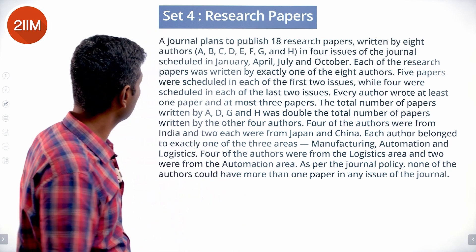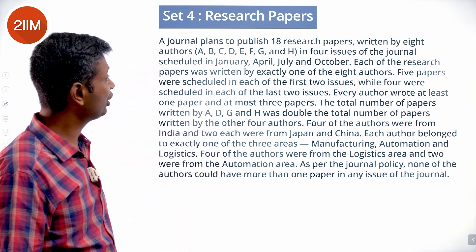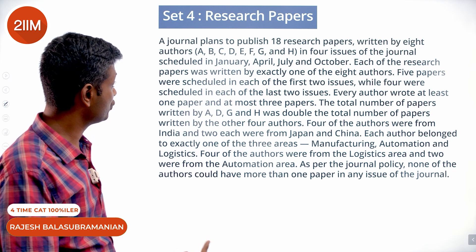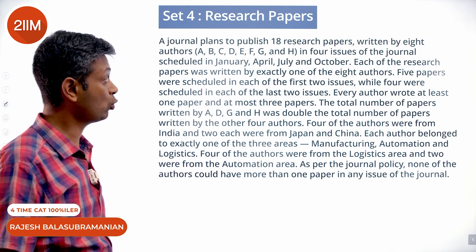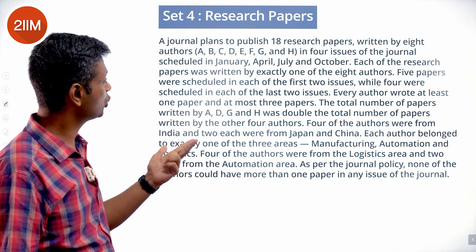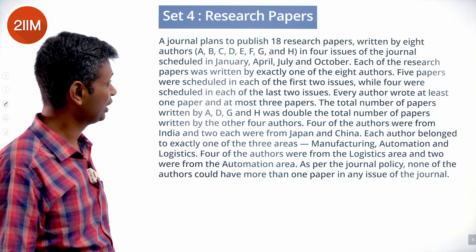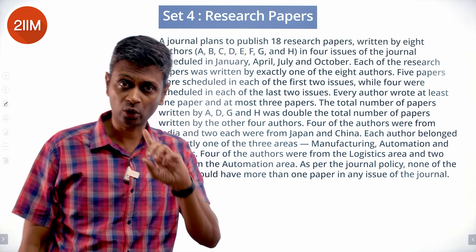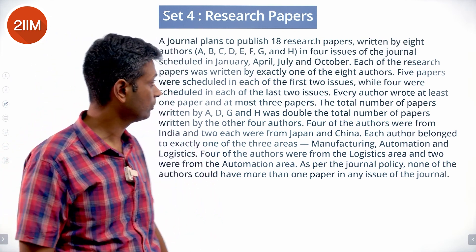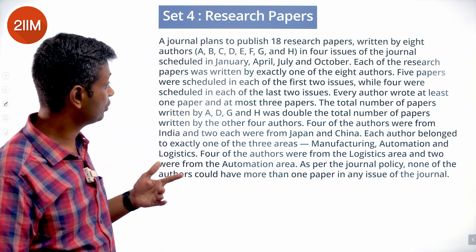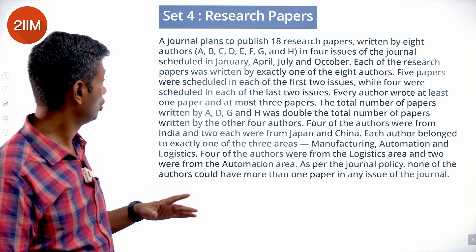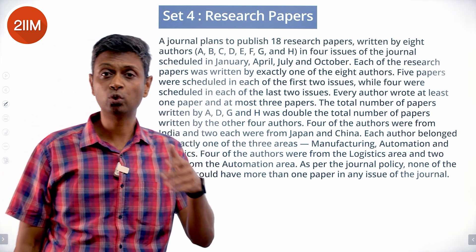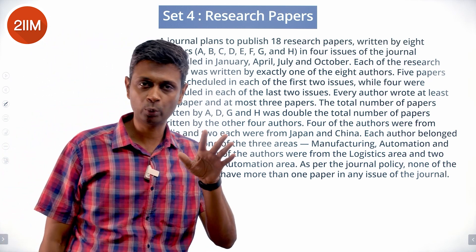Research papers. A journal plans to publish 18 research papers written by eight authors A, B, C, D, E, F, G, and H in four issues: January, April, July, and October. Each research paper was written by exactly one of the eight authors. Five papers were scheduled in each of the first two issues, four each in the last two issues — five, five, four, four — adding up to 18.